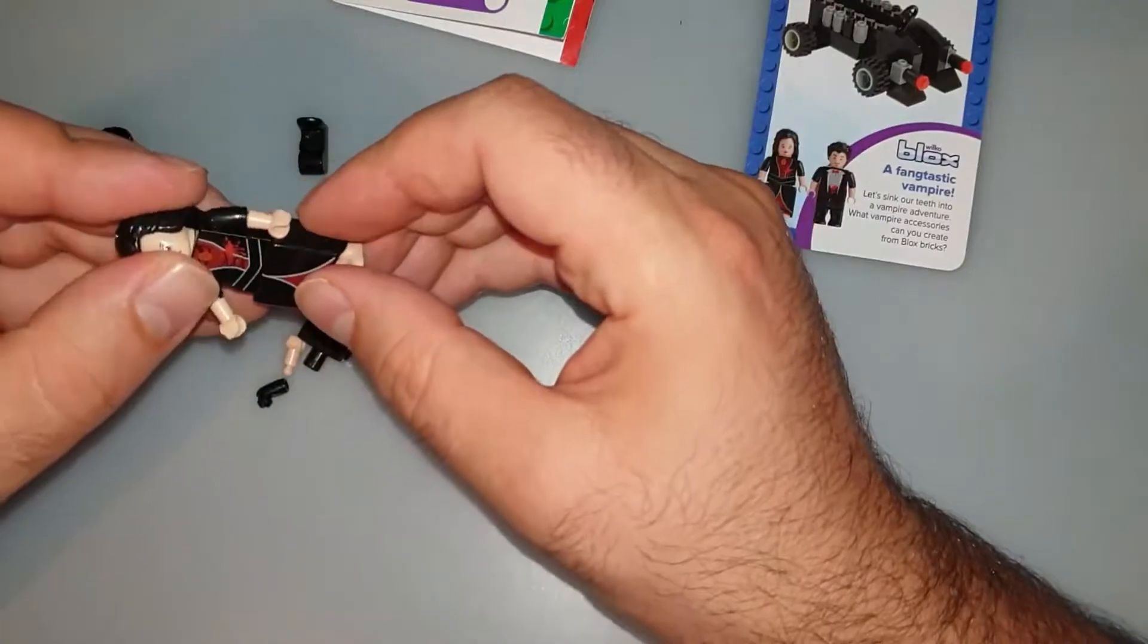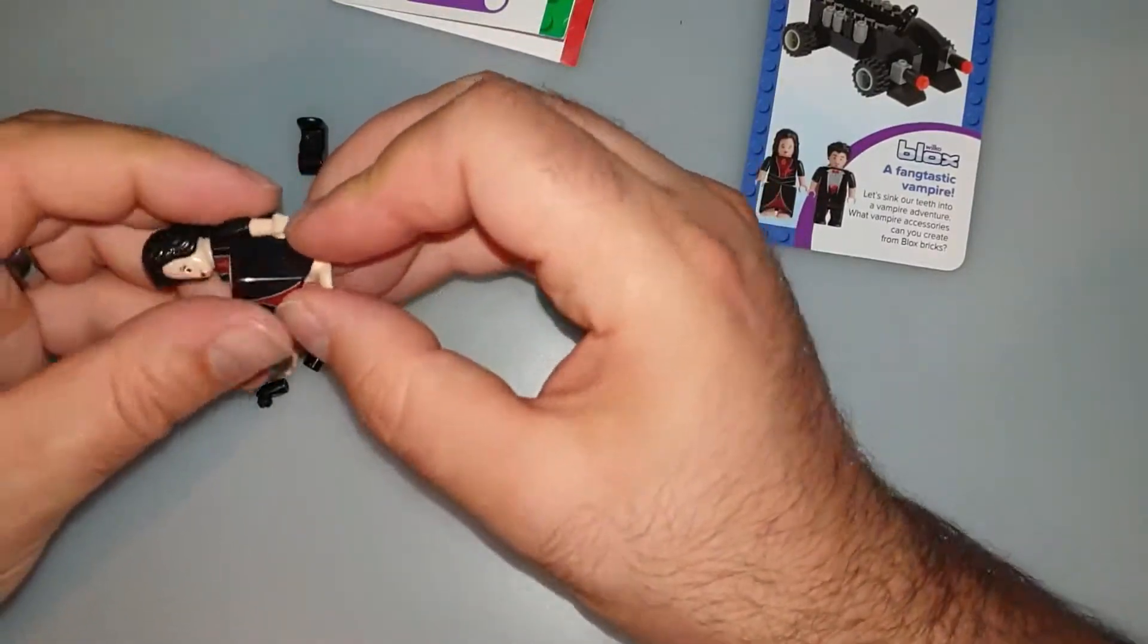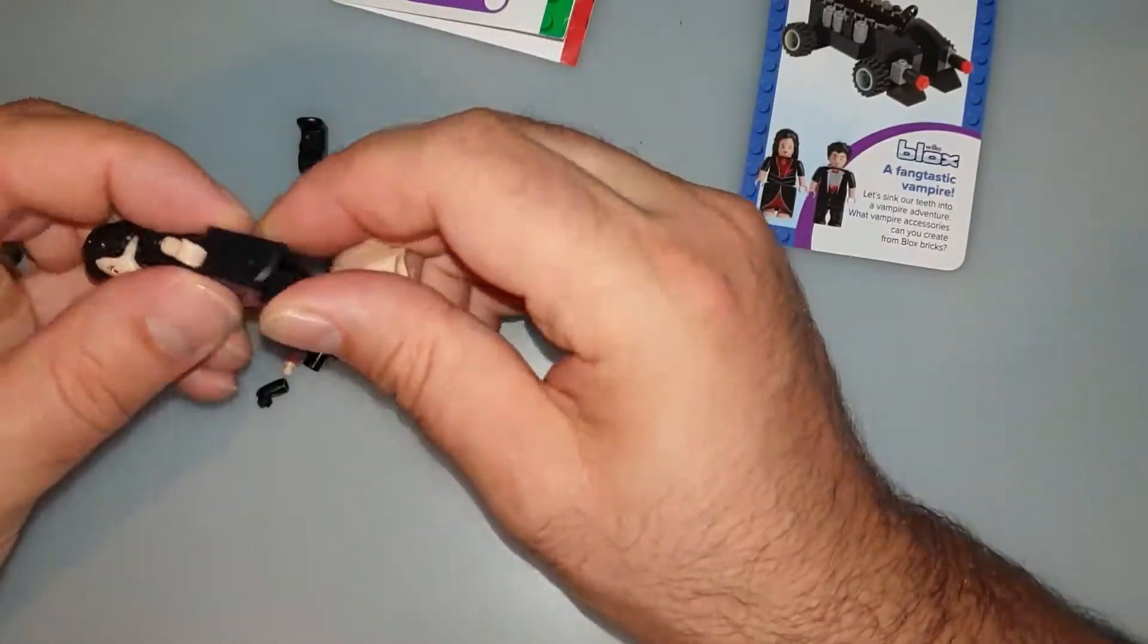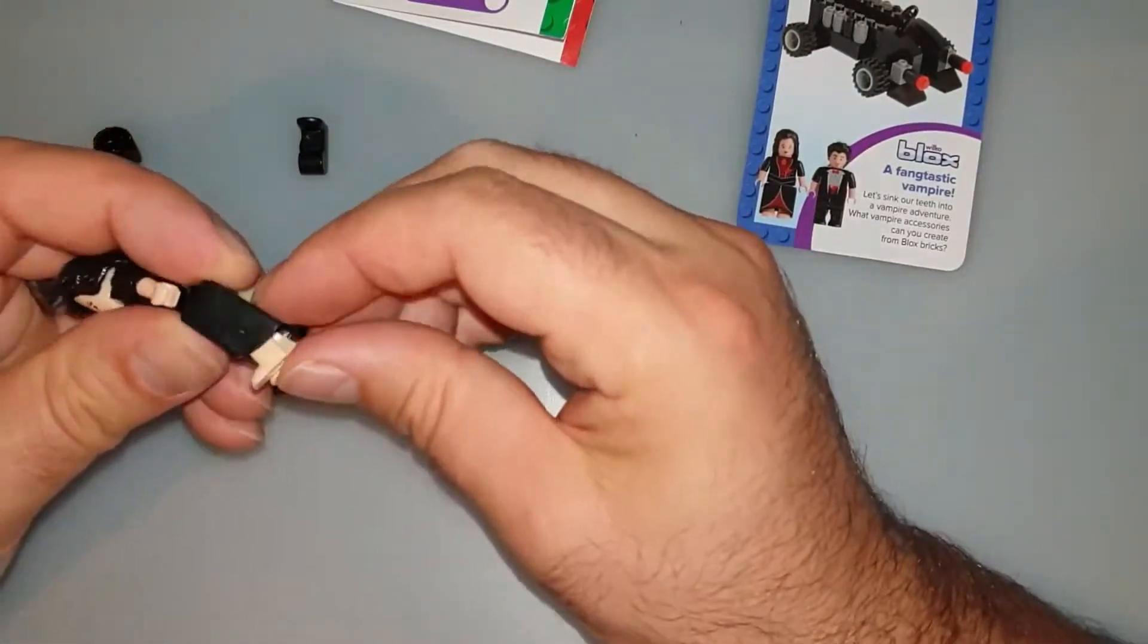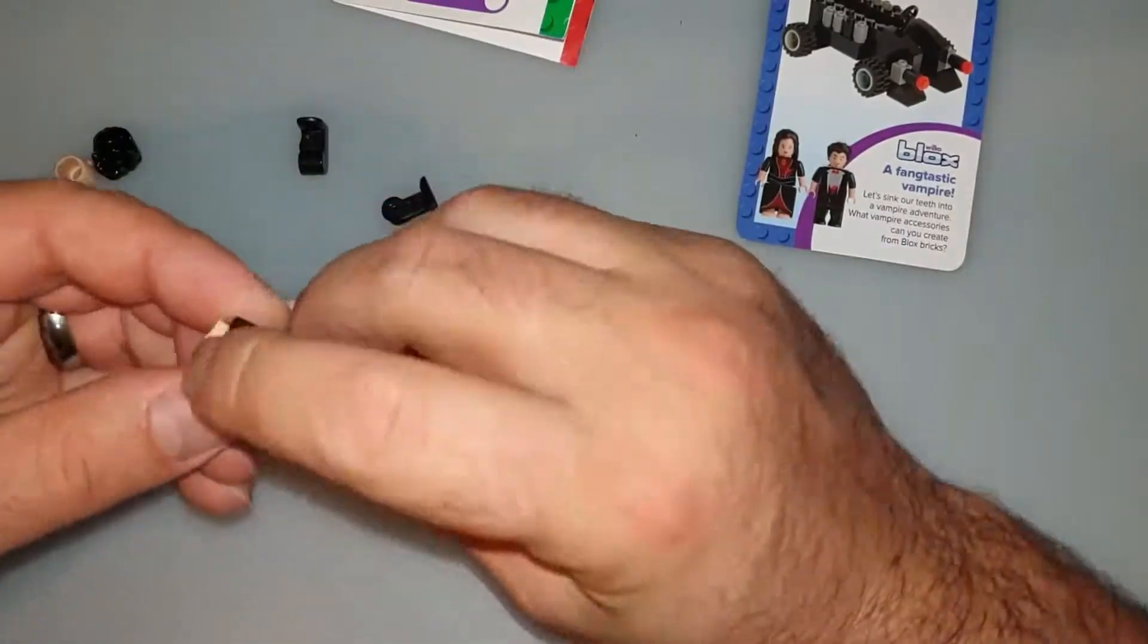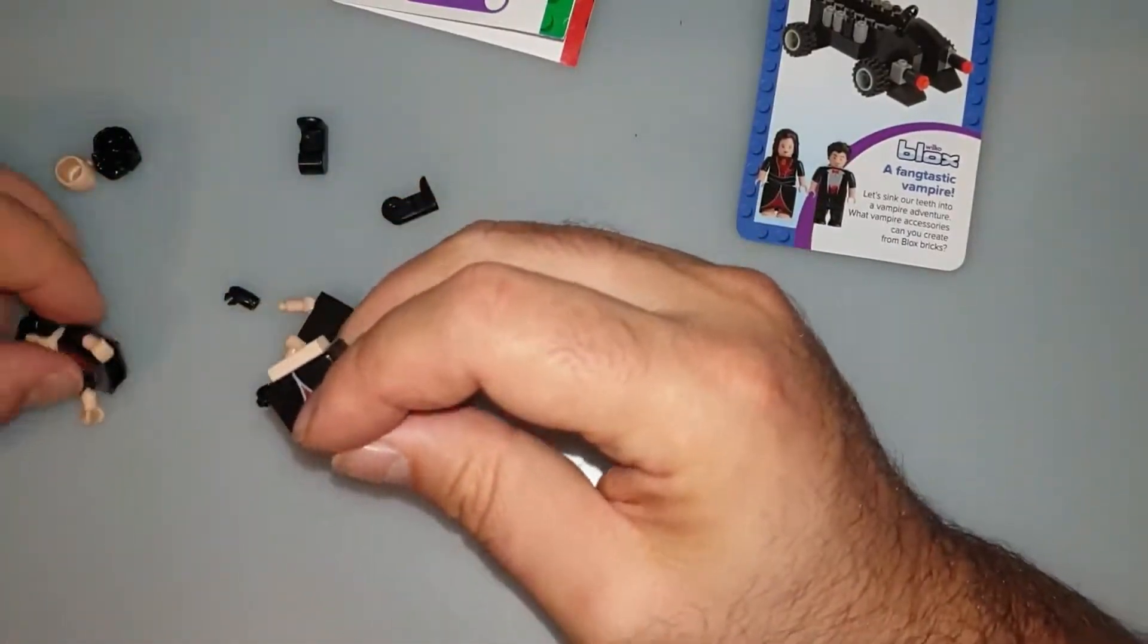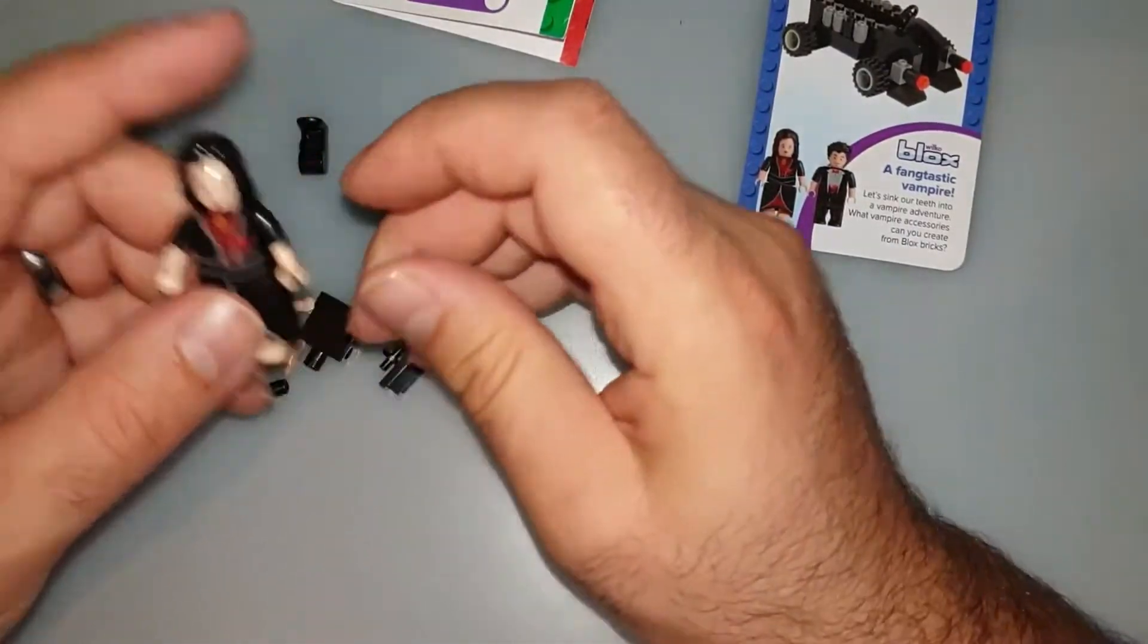Nice. Is she going here or is it the other way? No, it should be like this according to the picture. Probably. Yeah. This part is going up. And then there she is, the lady vampire.